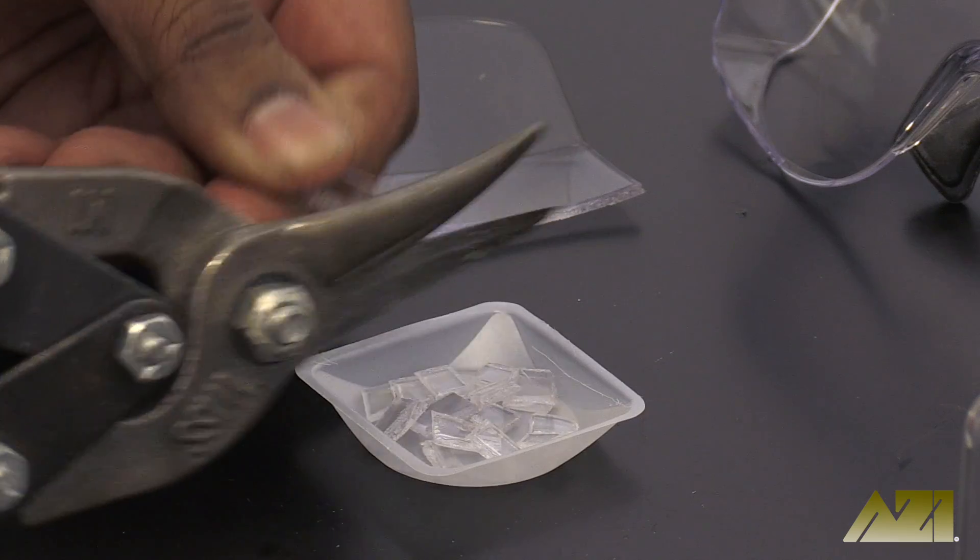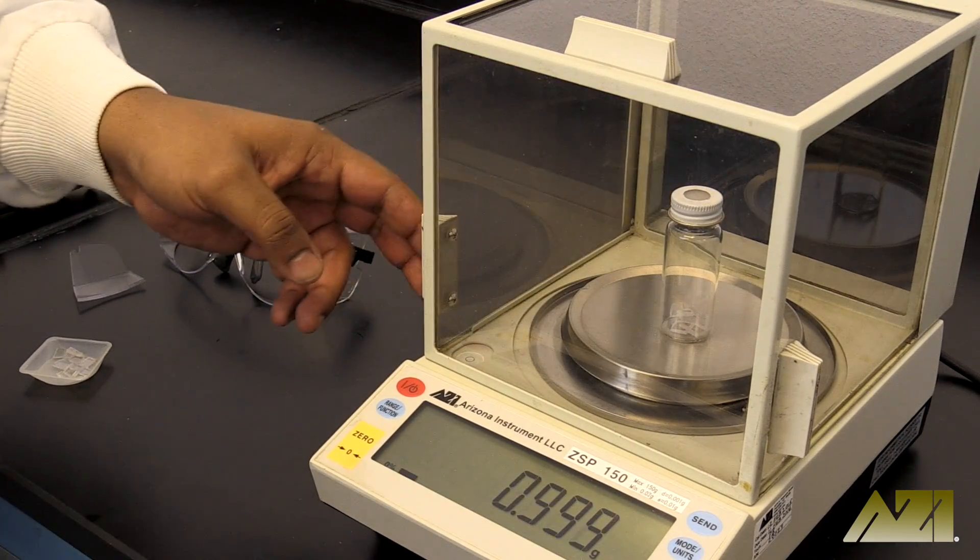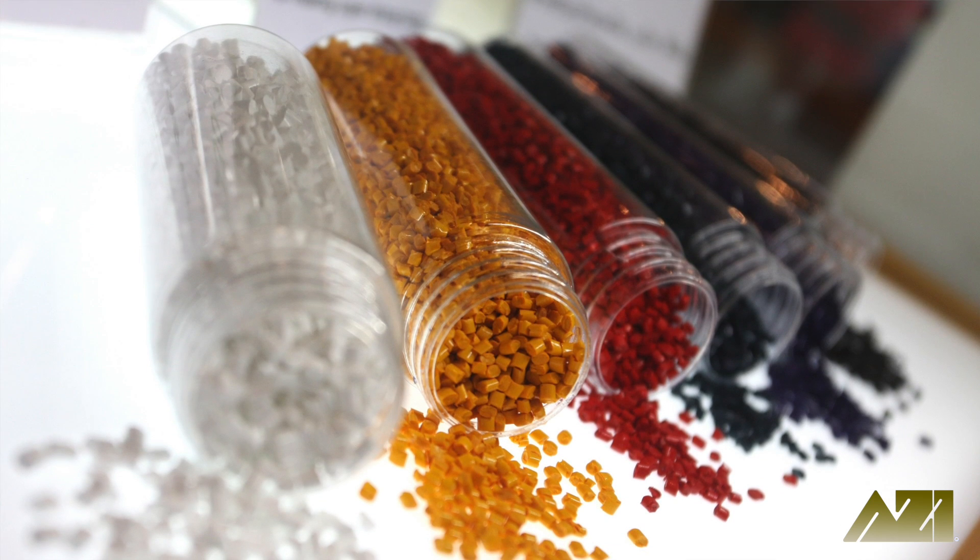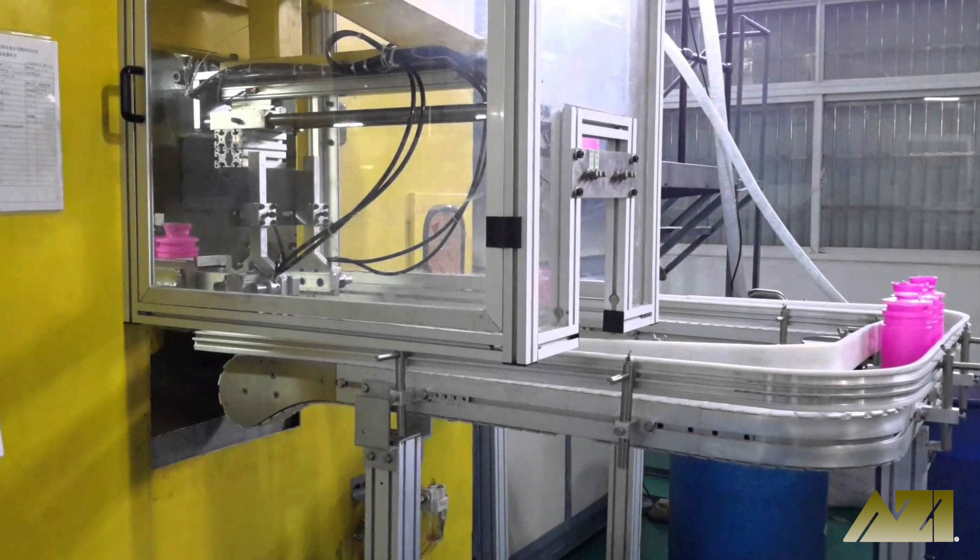Before a pair of safety glasses becomes a pair of safety glasses, it's a bunch of tiny plastic pellets. The pellets get melted down, additives and colorants get added, and then the melted substance heads off to be molded or extruded.